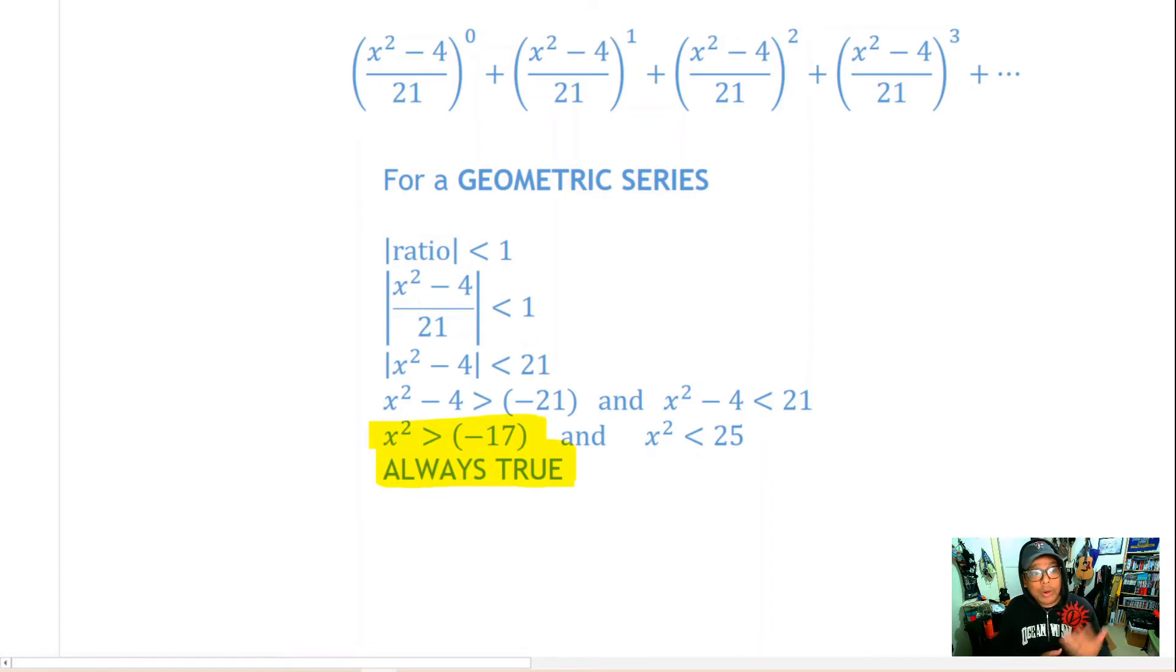Well we know that x² is always going to be greater than -17, because x² is always positive. So the only thing we really need to solve is x² is less than 25.